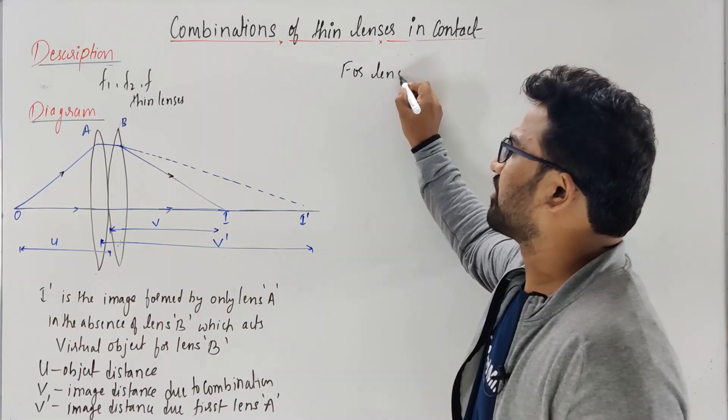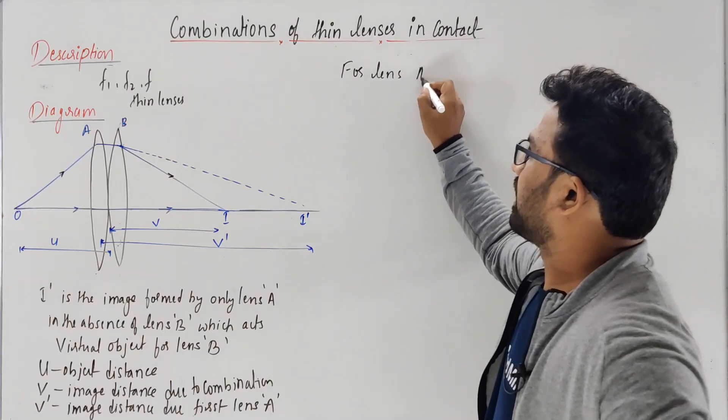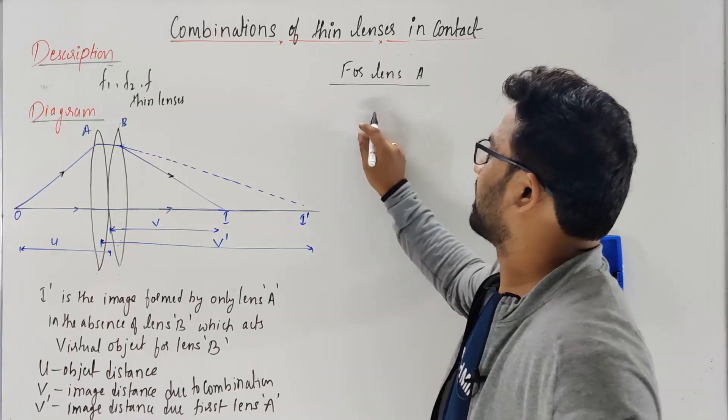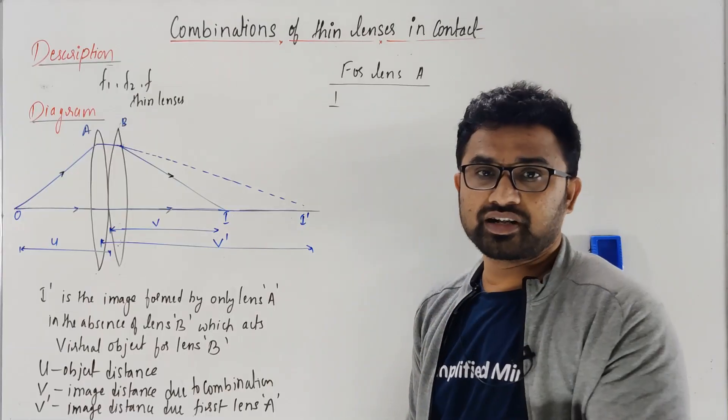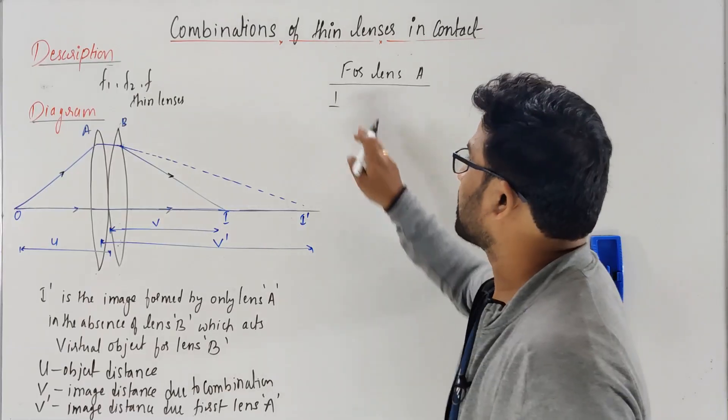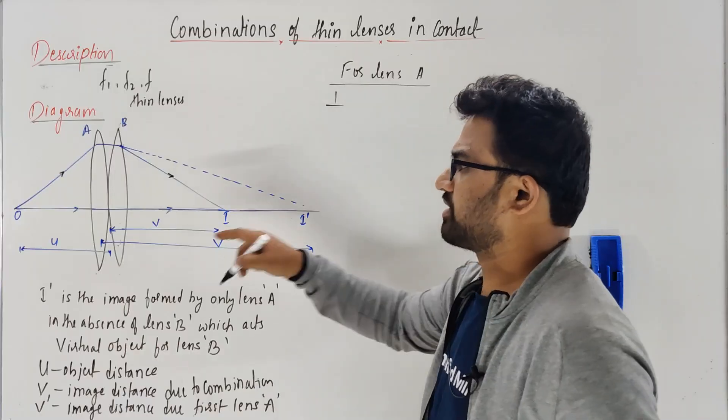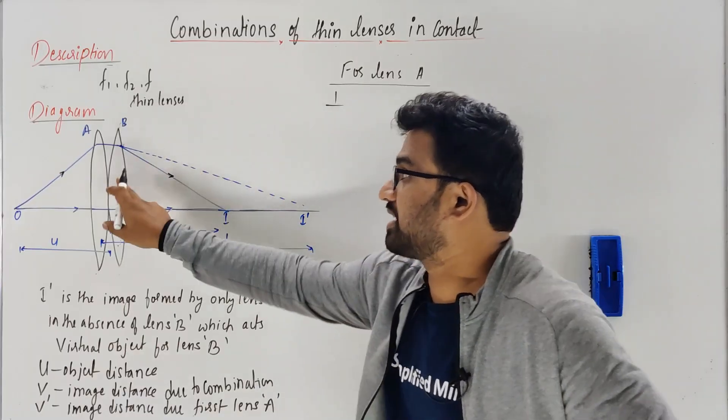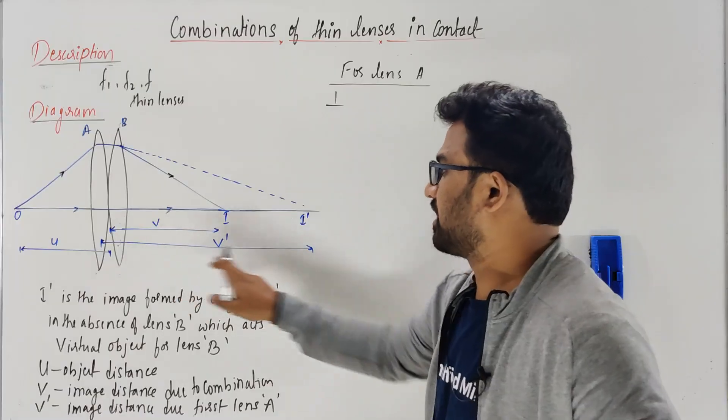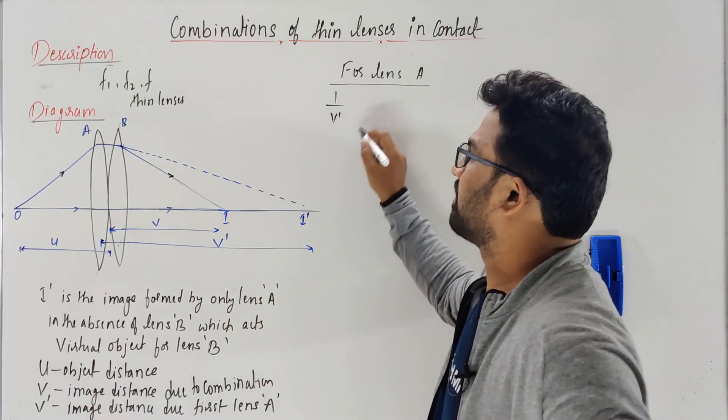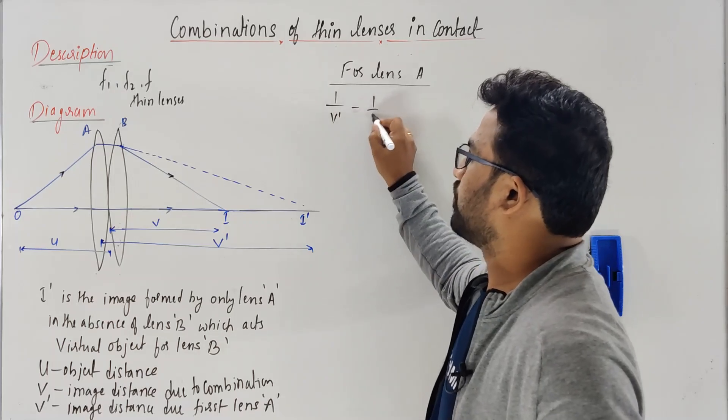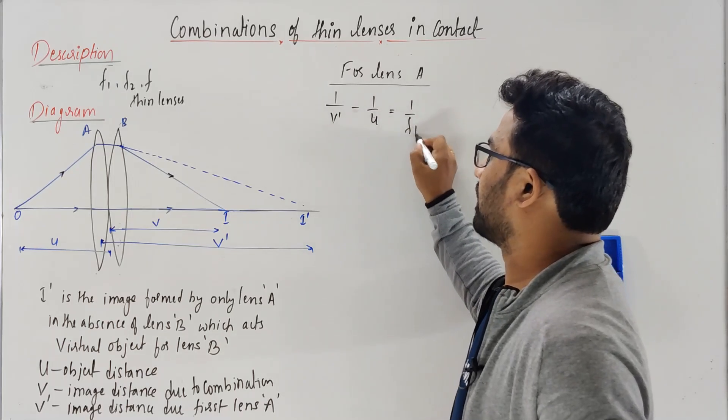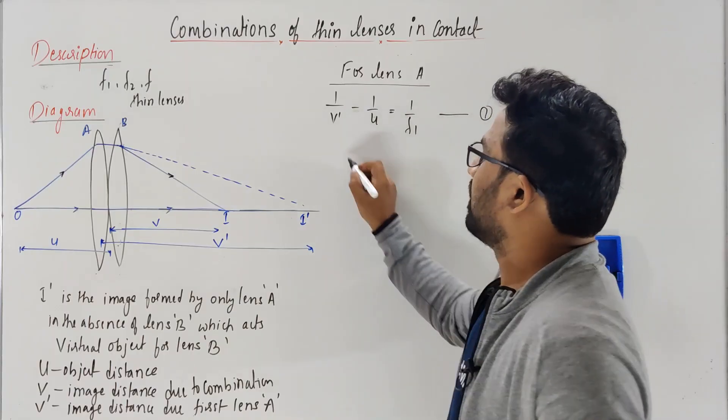It's a very easy derivation. For lens A, applying the formula: 1 over image distance minus 1 over object distance equals 1 over focal length. For the first lens, the image distance is v', so 1/v' minus 1/u equals 1/f1. Take this as equation 1.